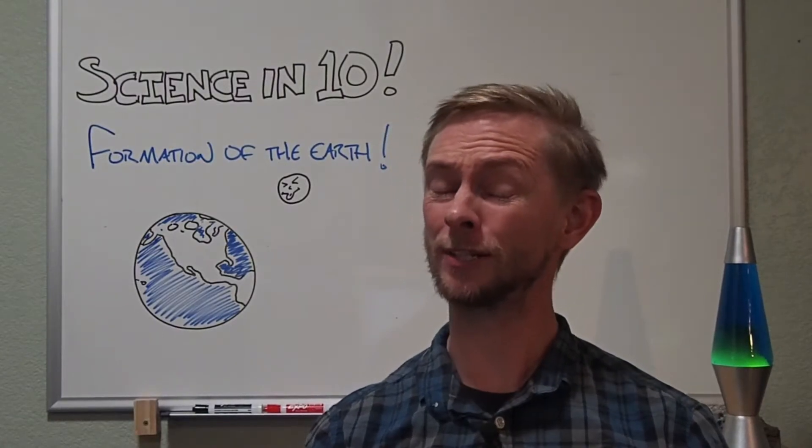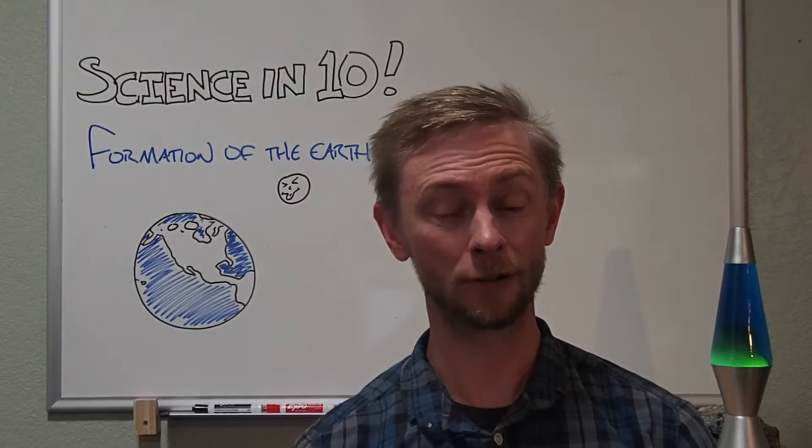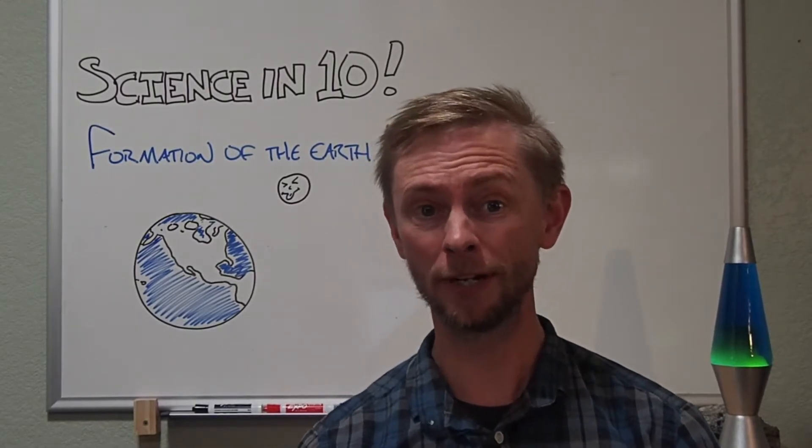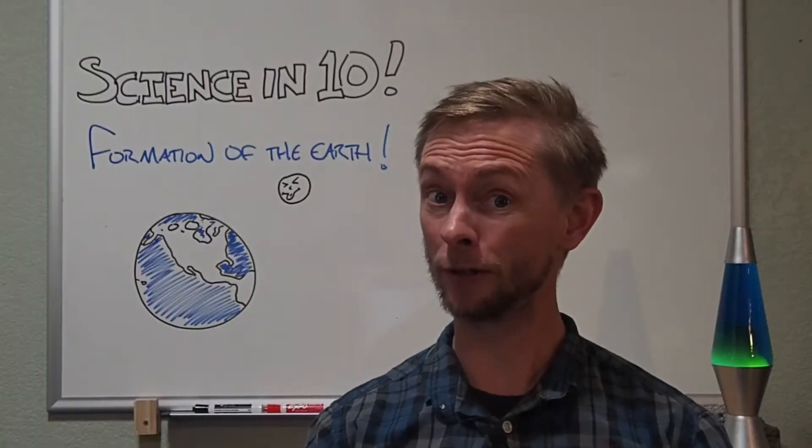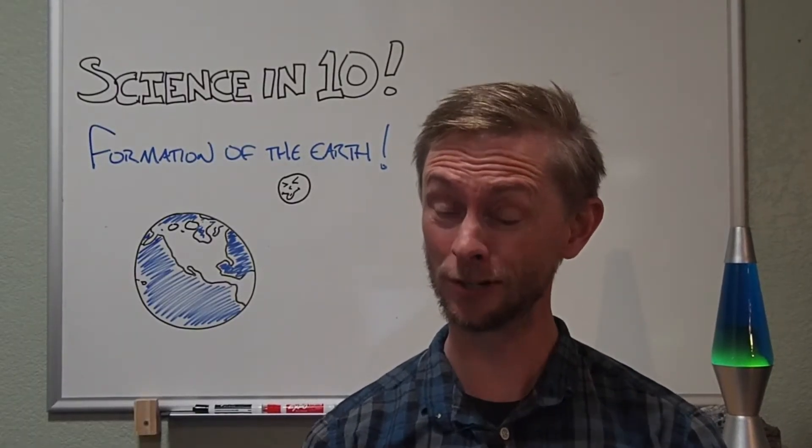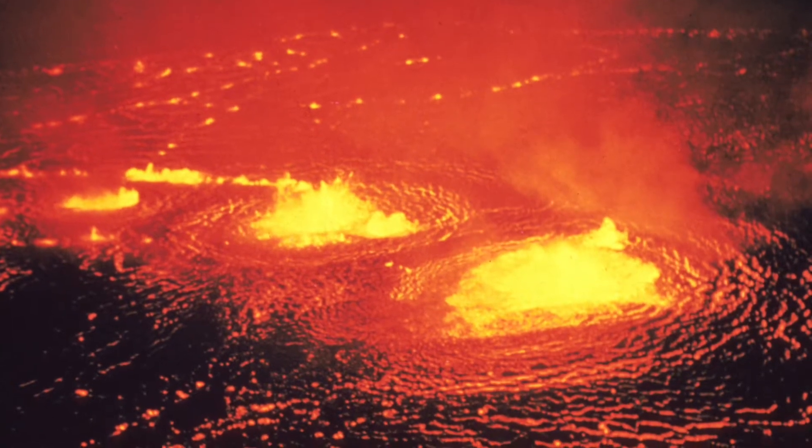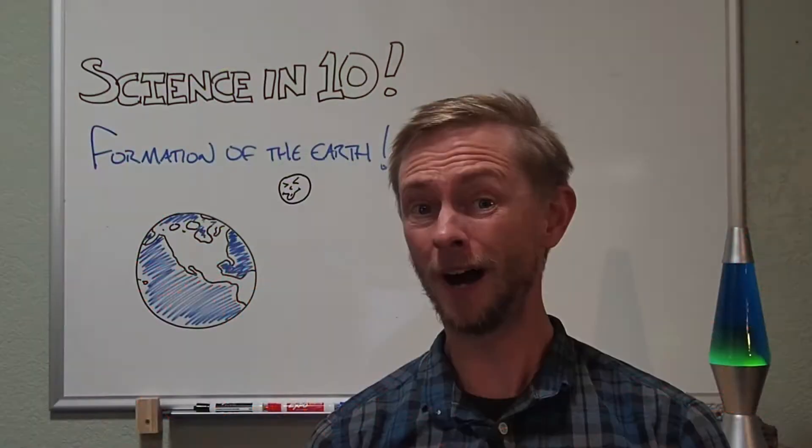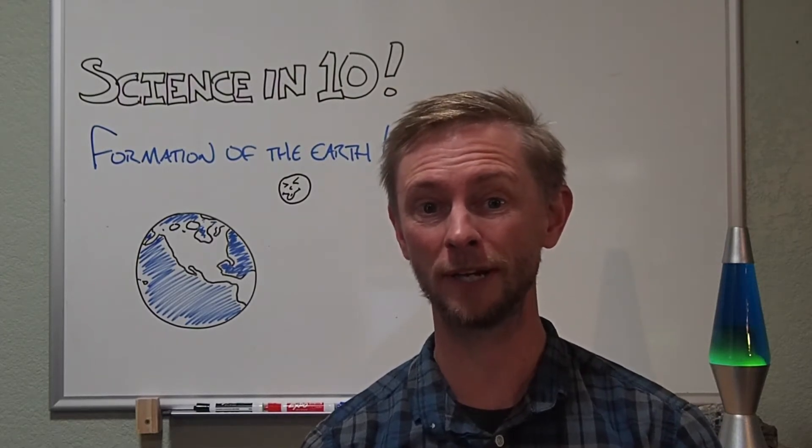But these early planets looked nothing like they do today. Wander around outside on Earth's surface right now, and it's a myriad of life, topography, and geology. Wander around on Earth's surface four and a half billion years ago, and you'd find a violent sea of molten rock that comprised the entire planet. This was a hostile place, under constant bombardment by asteroids and other planetesimals.